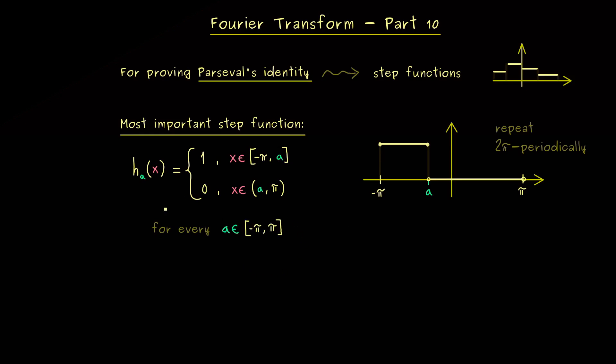And please note that this definition works for every a in the interval minus pi to pi. In other words, with this example, we cover all examples where a lies somewhere here in the middle. And the surprising thing is that it will turn out, that this is all we need to show Parseval's identity for all L2 functions. Indeed, there is some strong theory in between. But in the end, the only calculation we have to do is for this example.